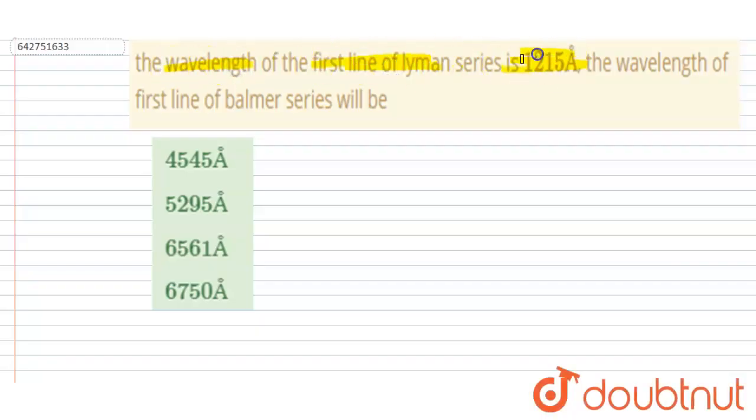Everyone, the wavelength of the first line of Lyman series is 1215Å. The wavelength of the first line of Balmer series will be... If I talk about the first line of Lyman series, for first line of Lyman series, n_final will be equal to 1.